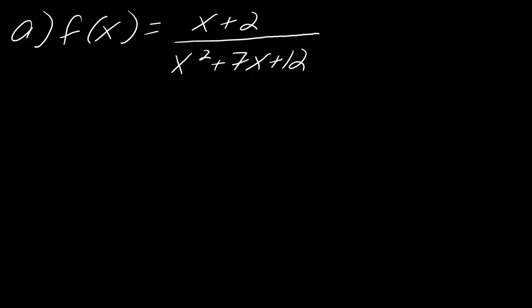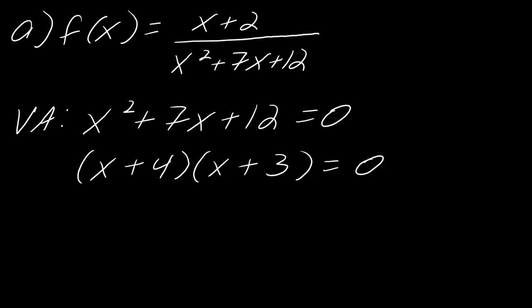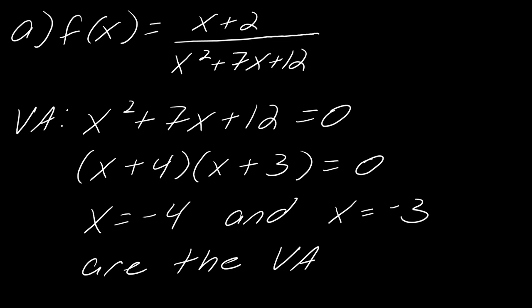Let's find any asymptotes for the function (x + 2) / (x² + 7x + 12). Starting with the vertical asymptote: we take the denominator, set it equal to 0, and solve. This factors as (x + 4)(x + 3), giving x equals negative 4 and x equals negative 3. Those are the two equations for the vertical asymptotes — that's all you have to do.